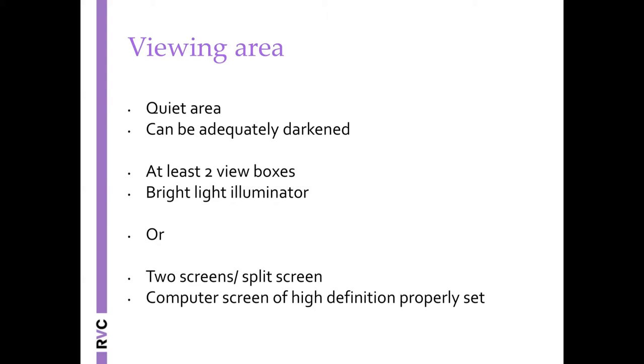When we look at radiographs we need at least two view boxes. We are going to use two orthogonal views—it's a three dimensional world. We need two views to identify where whatever we see is in three dimensional reality, and we need a bright light illuminator so we can see the darker areas of the radiograph.